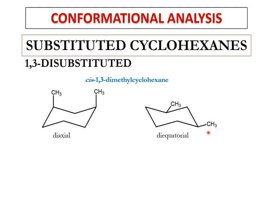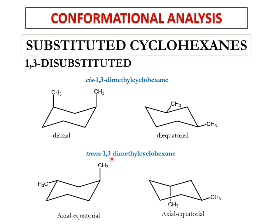For trans-1,3-dimethylcyclohexane, at positions one and three the trans groups are axially and equatorially oriented. One CH₃ is projected upwards and axial, the other is projected downwards and equatorial — giving an axial-equatorial orientation. When the ring flips, the axial CH₃ becomes equatorial and the equatorial CH₃ becomes axial. So trans-1,3-dimethylcyclohexane has two conformations both with axial-equatorial orientation and both have similar energies.